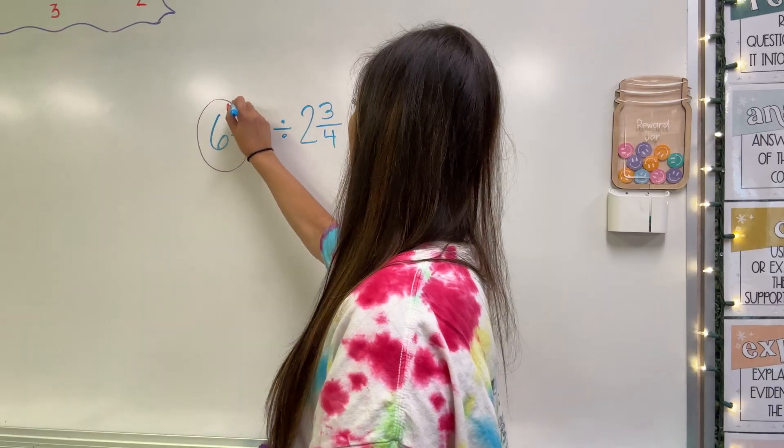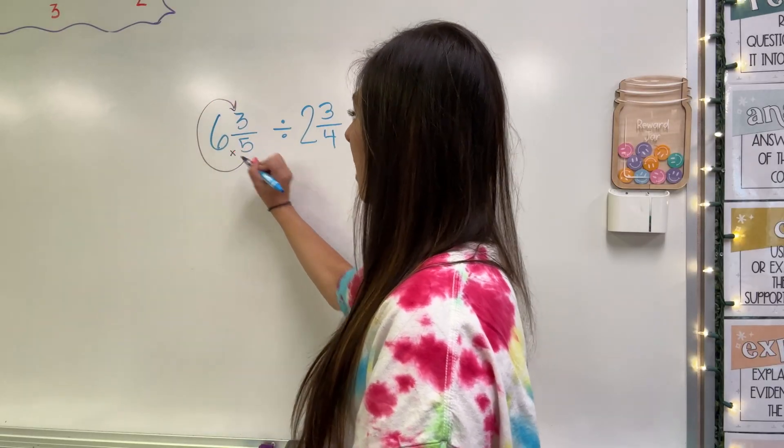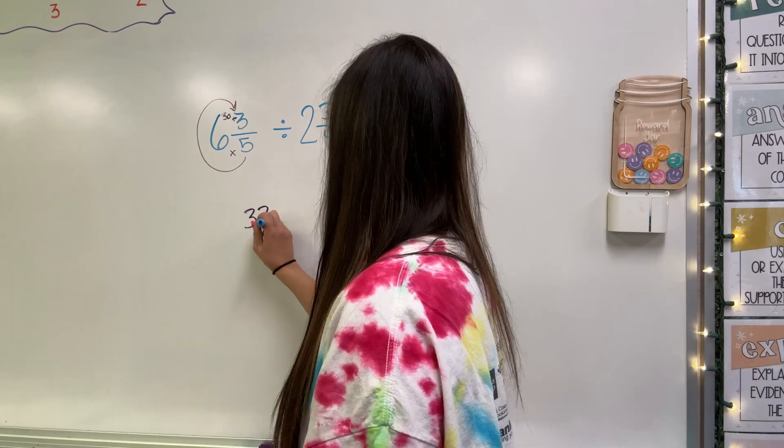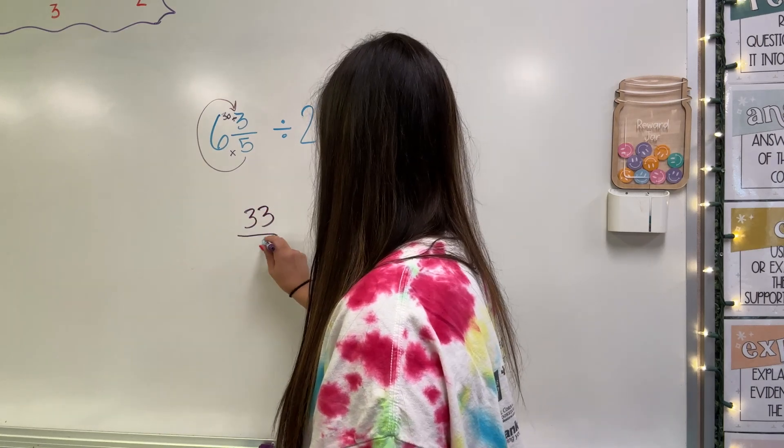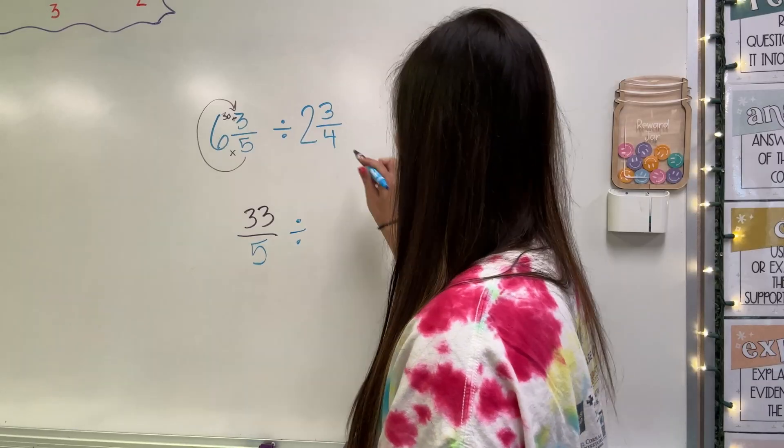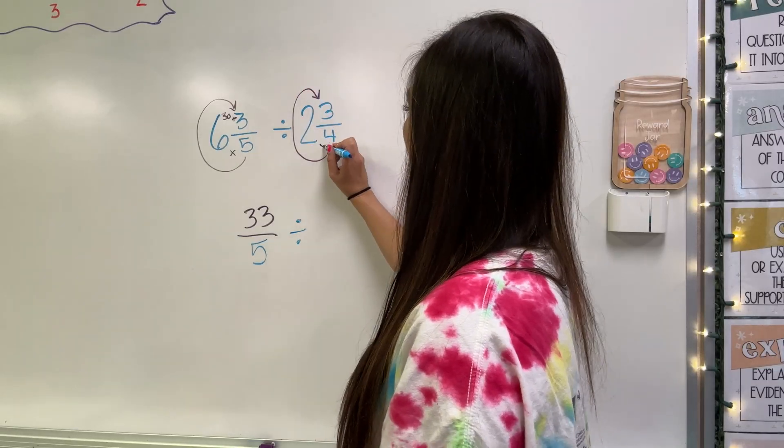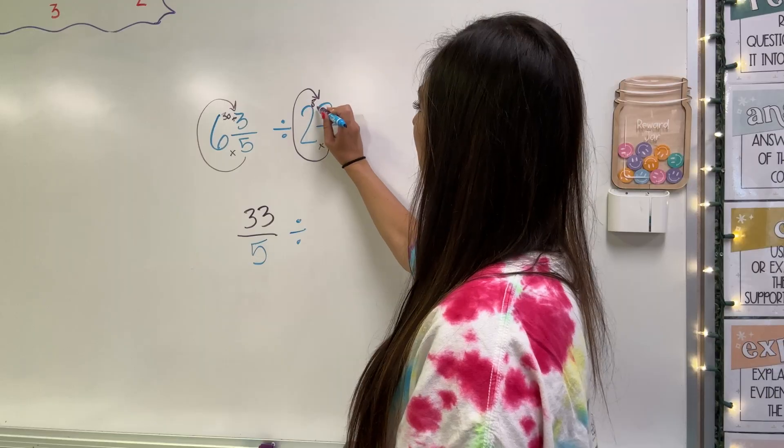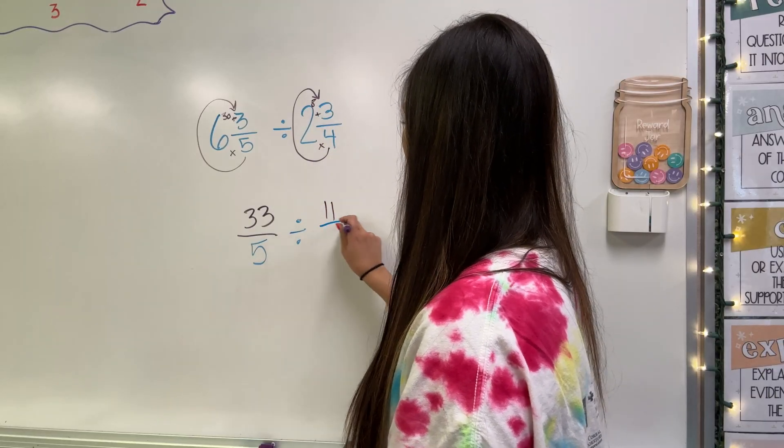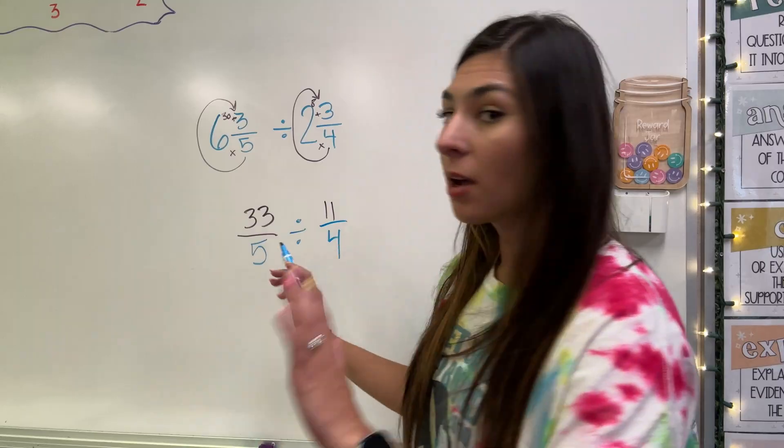So reverse C, I'm going to do six times five. That's 30 plus that three. So that's going to be 33 over five. Keep the division symbol because we're not doing that part yet. Reverse C on my next problem. Four times two is eight plus three, 11. Keep the denominator. That's done.